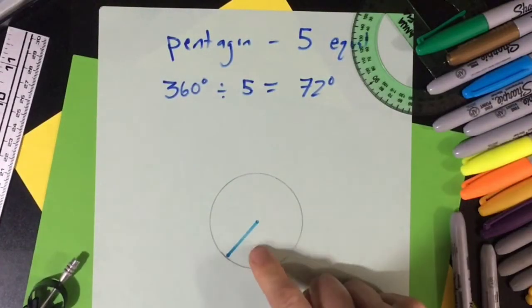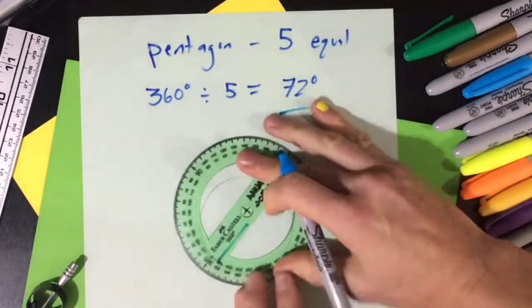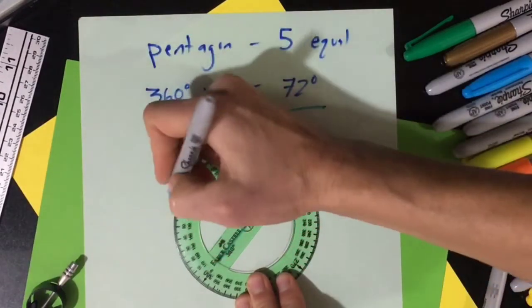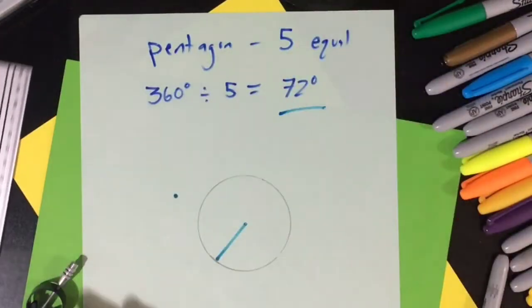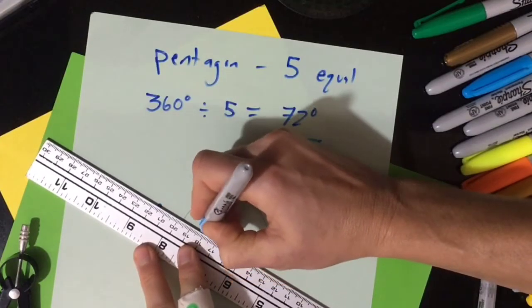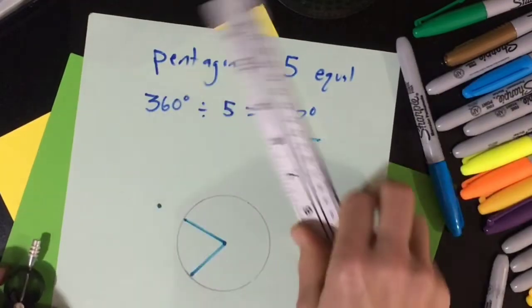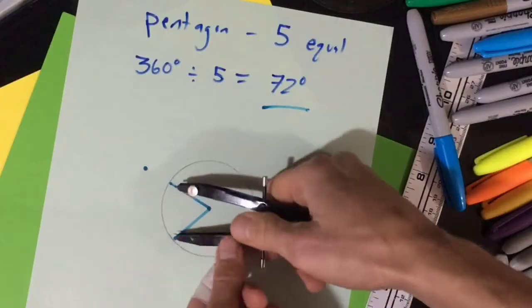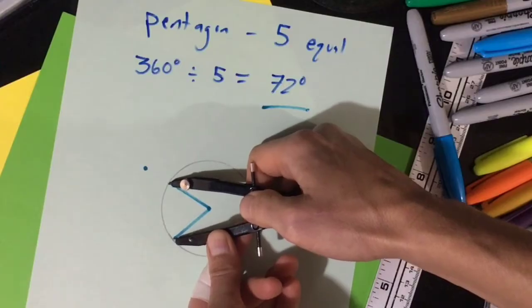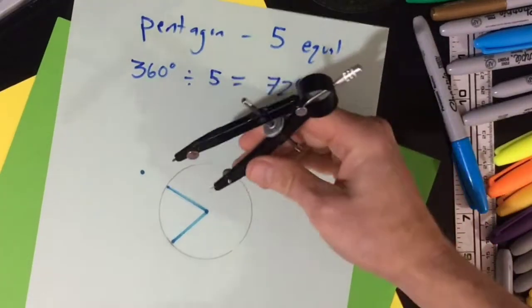Then from this first little line that you drew, you're going to draw that 72 degree angle. Draw it just to the outside of the circle. Then you're going to measure with your compass that length from one point on the circle to the other point on the circle.